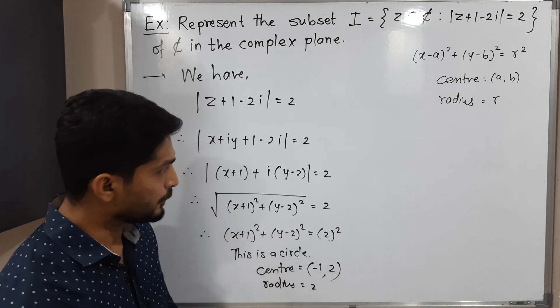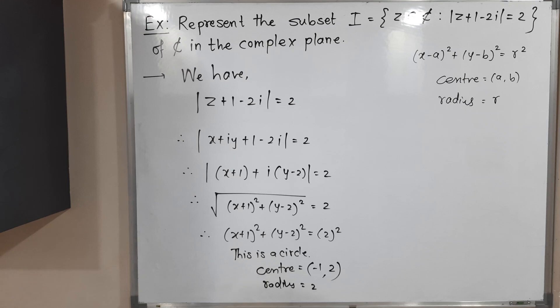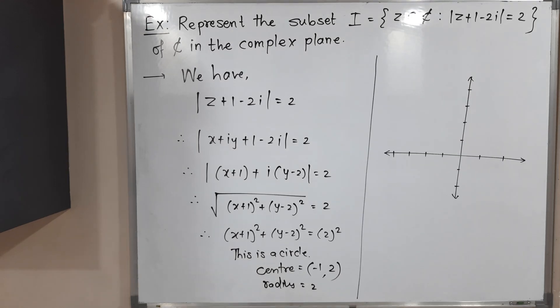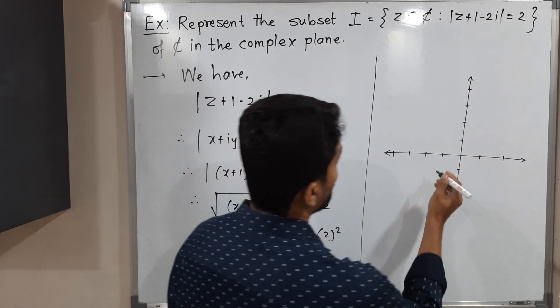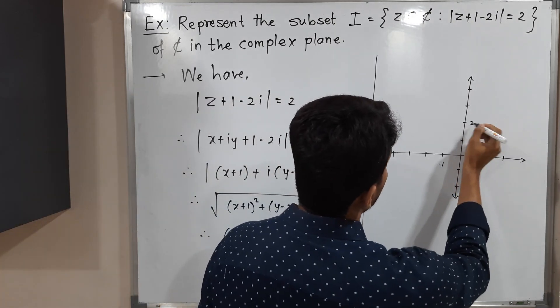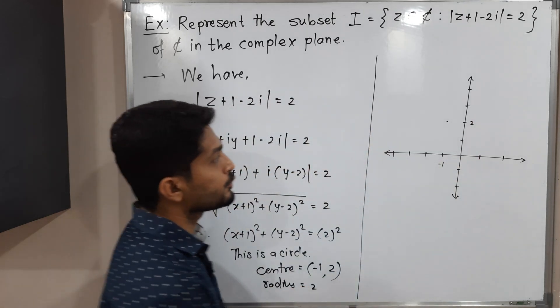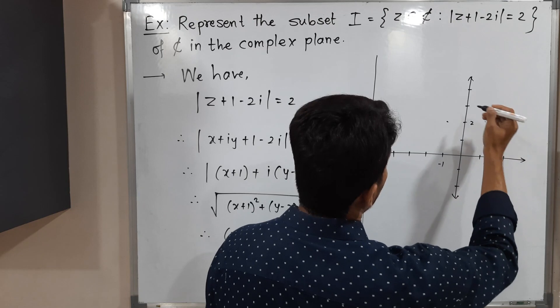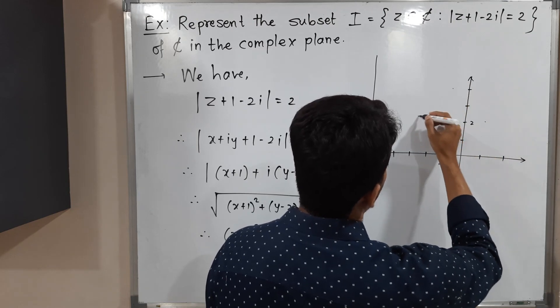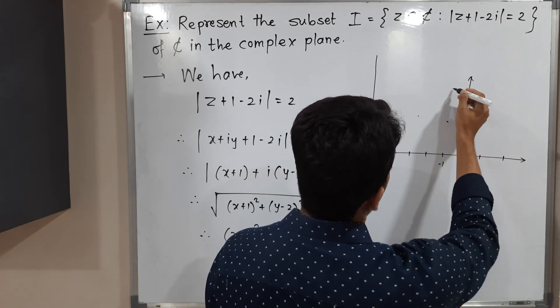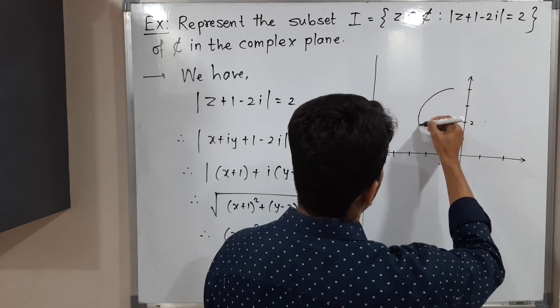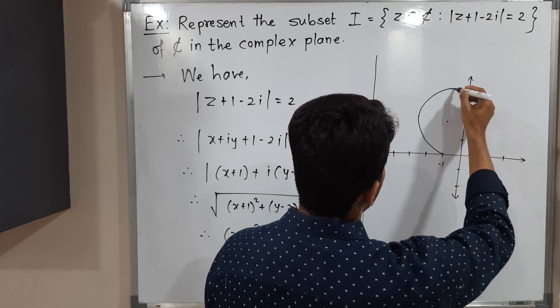Radius is 2, so on that side we should go to here too, and on this side and below also. Let me draw the rough sketch of that circle. So this is the circle we have.